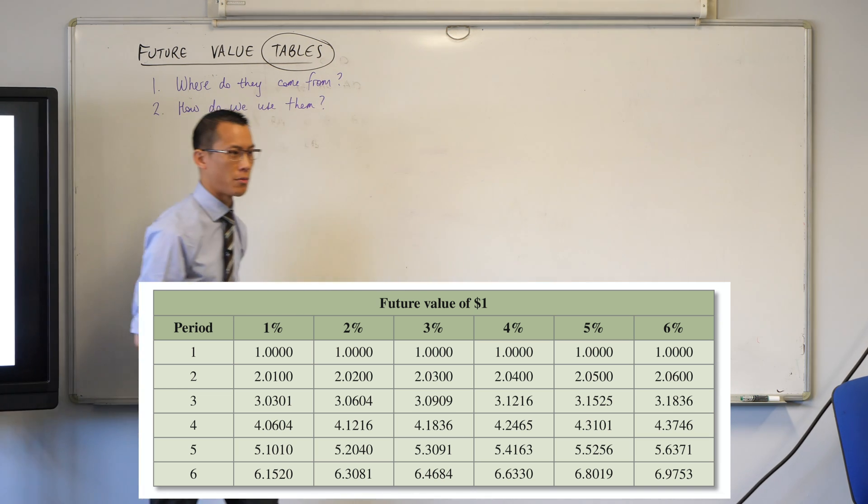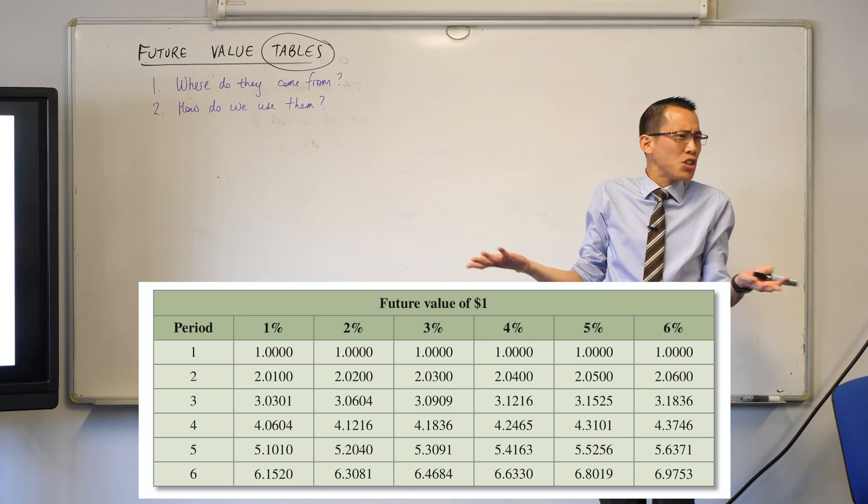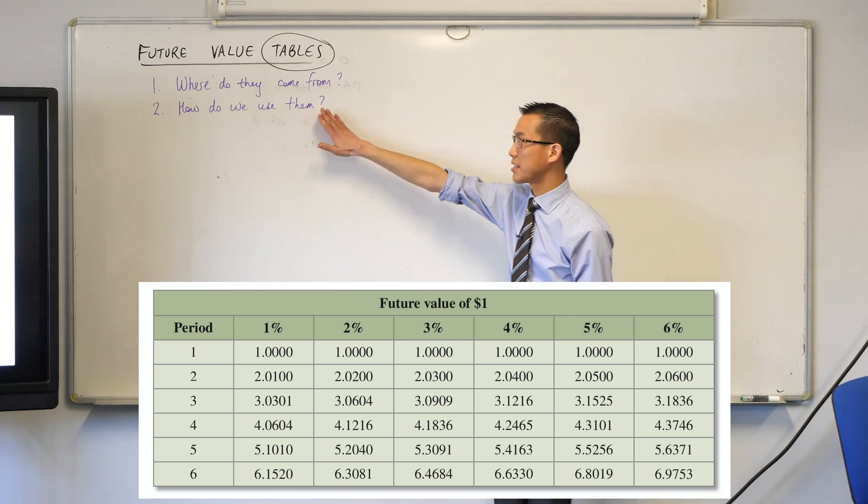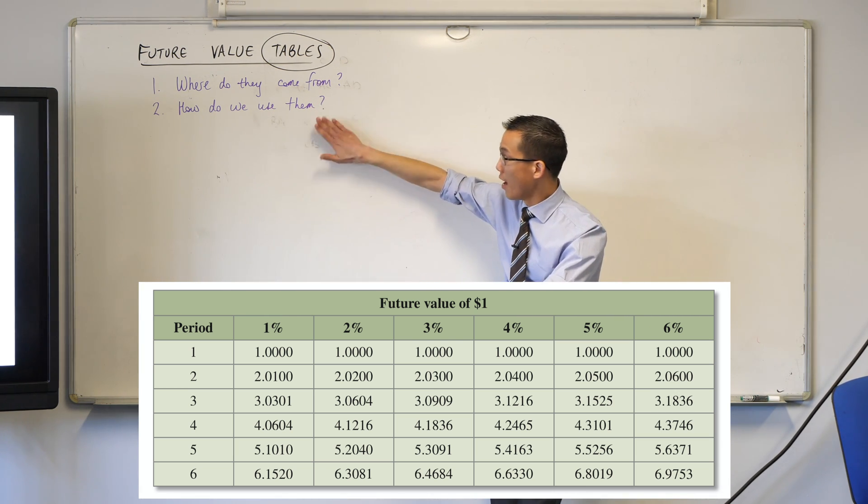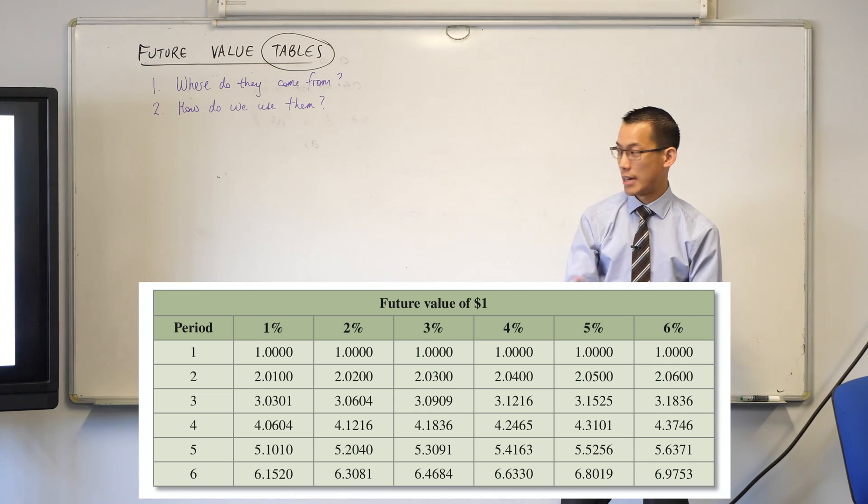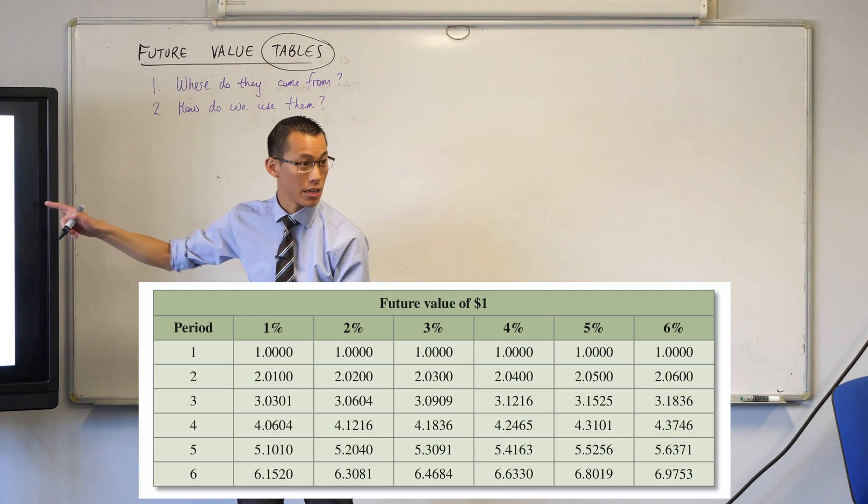where do these numbers come from? They're just, like, out of thin air, like, 6.633 says who, right? And then once we know where they come from, because we have that knowledge, where they're going to say, okay, well, how do we then use these tables, right? So, let's have a go at this, and that example that I just gave you before, let's start by writing that one down, let's try and get at where this number comes from, 6.633.